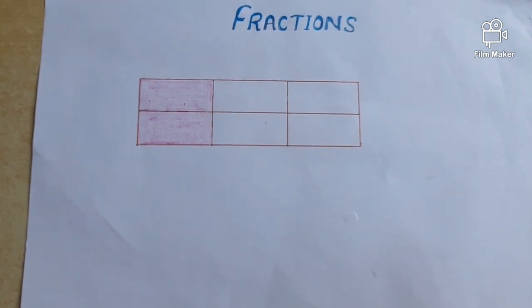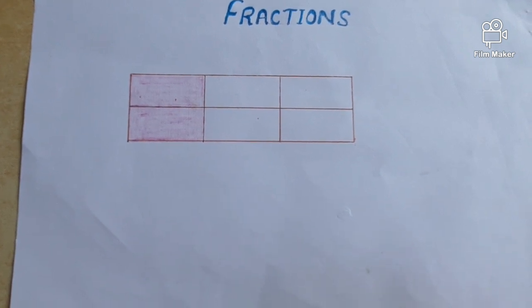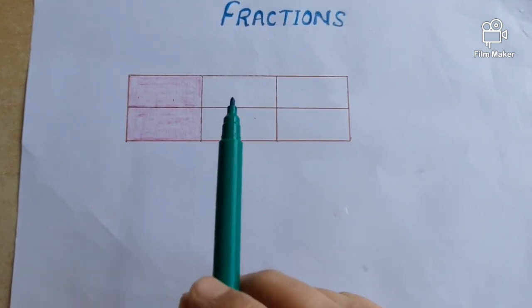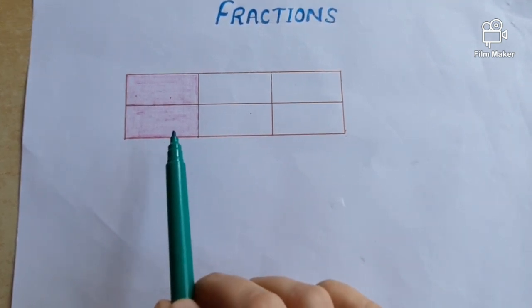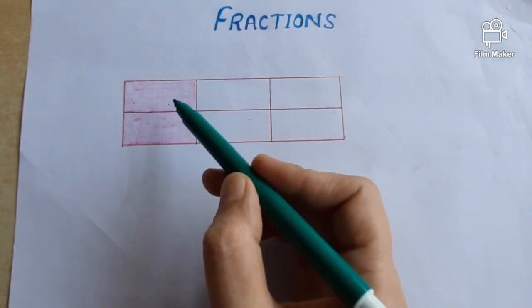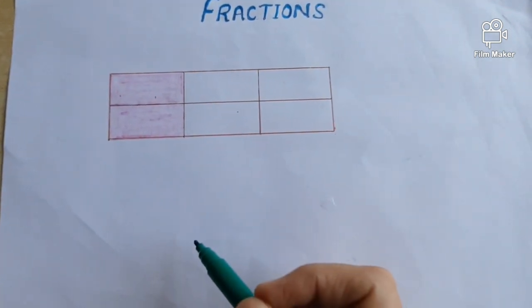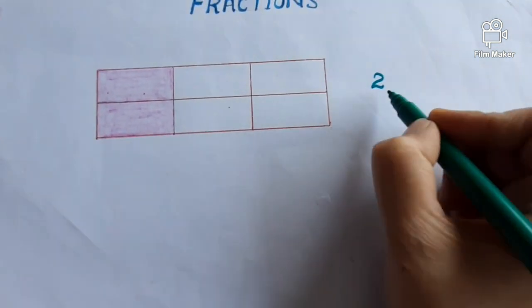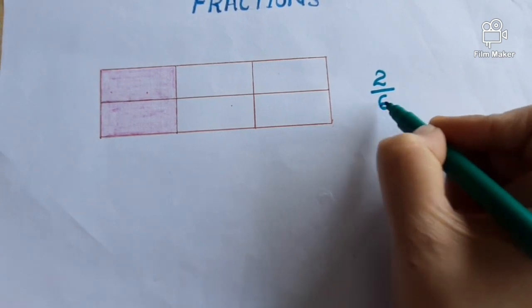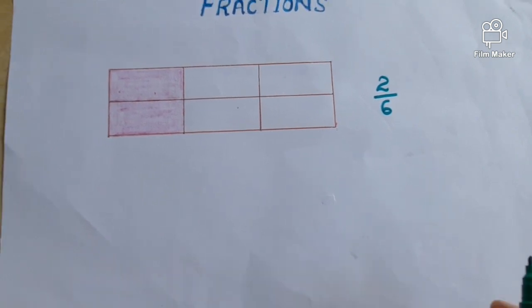Good morning students. These days we are doing fractions, and now you know how to write a fraction for the shaded parts. Here one figure is given — total we have one, two, three, four, five, six — six equal parts. This figure is divided into six equal parts and two parts are shaded, so the fraction for shaded parts is two by six.